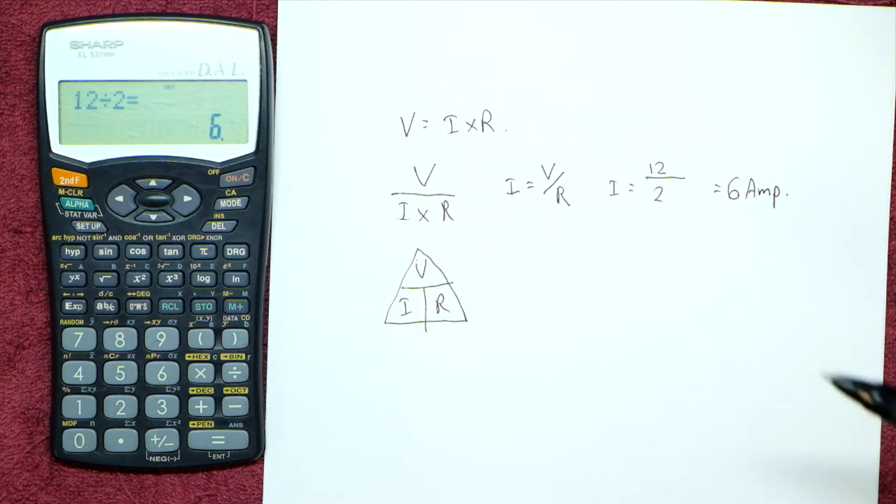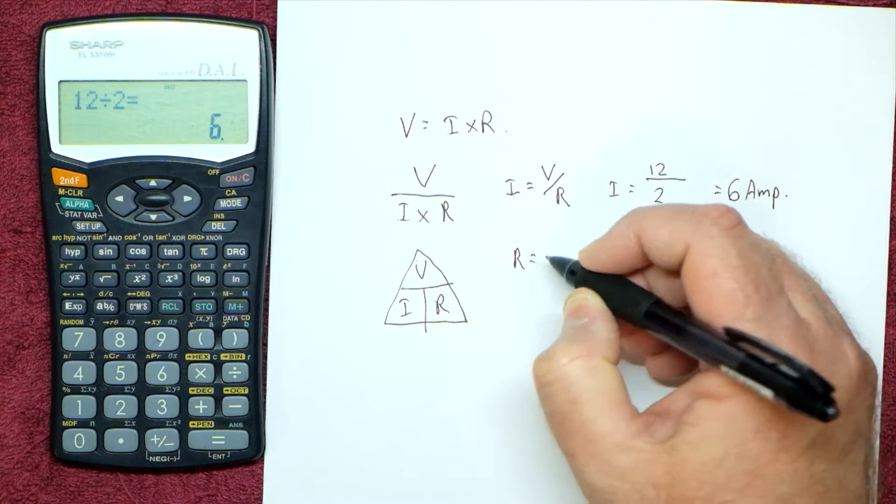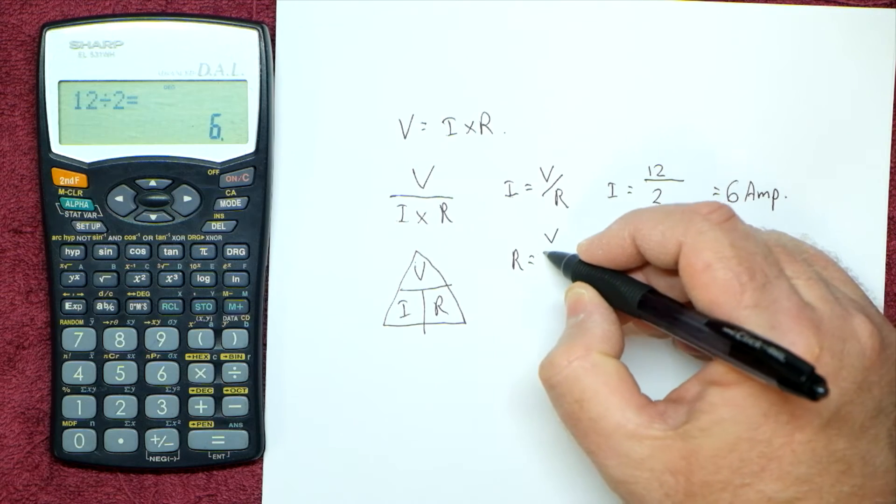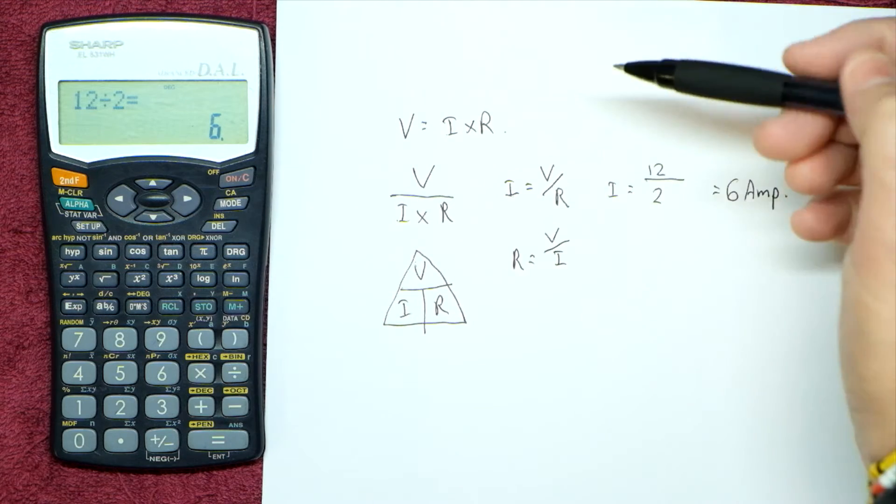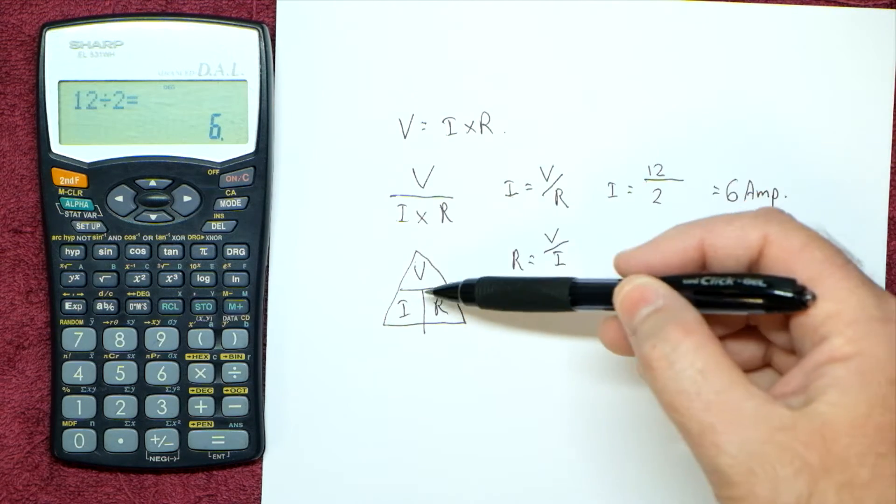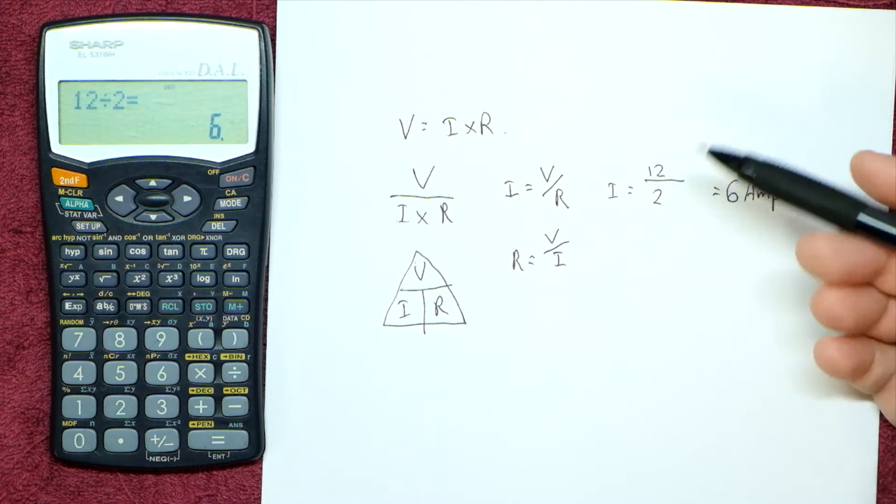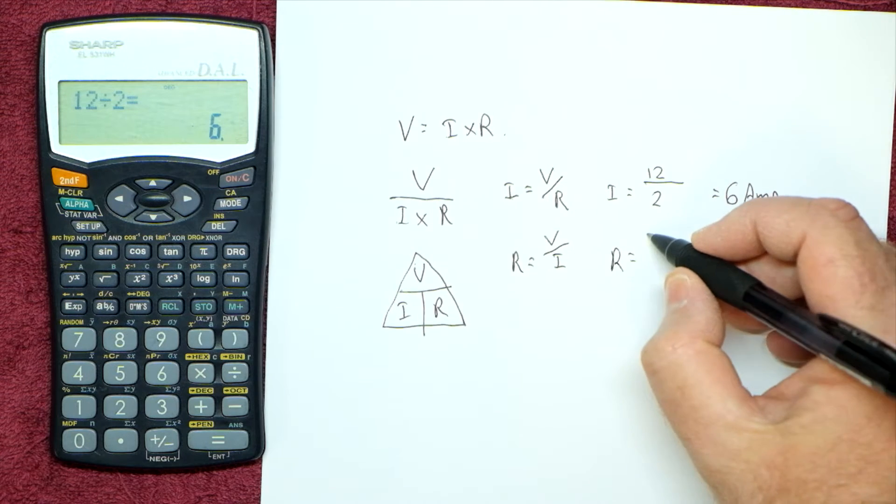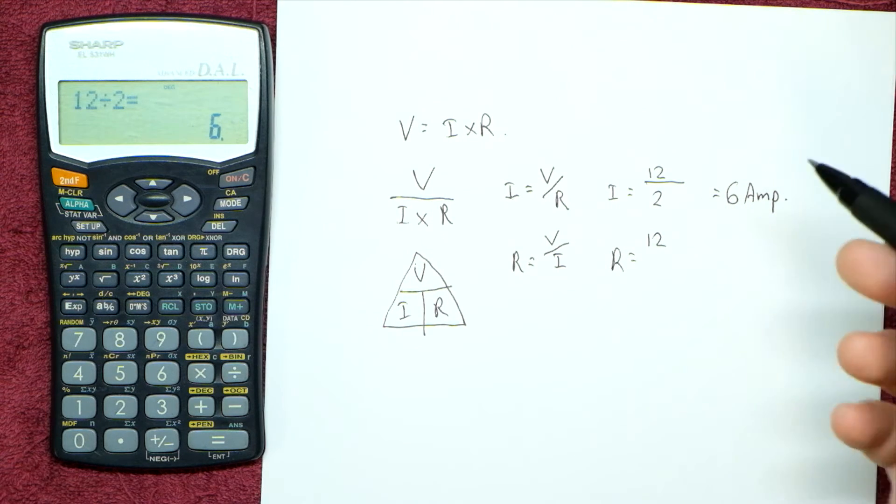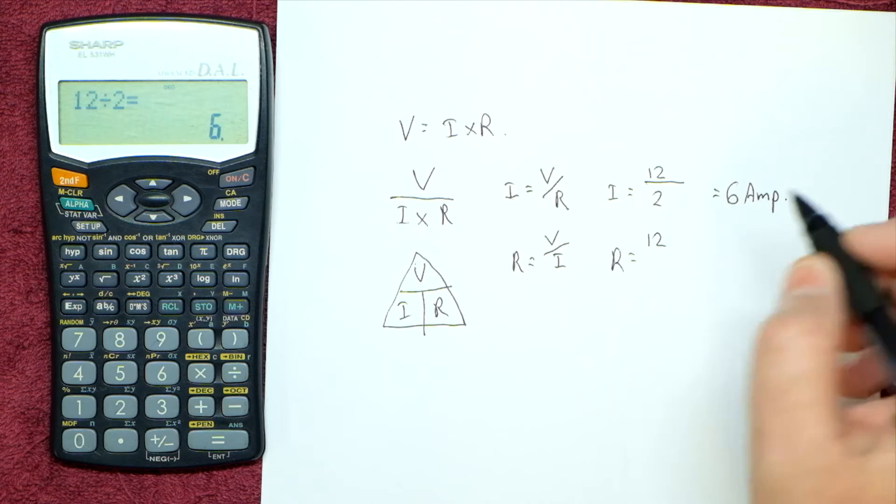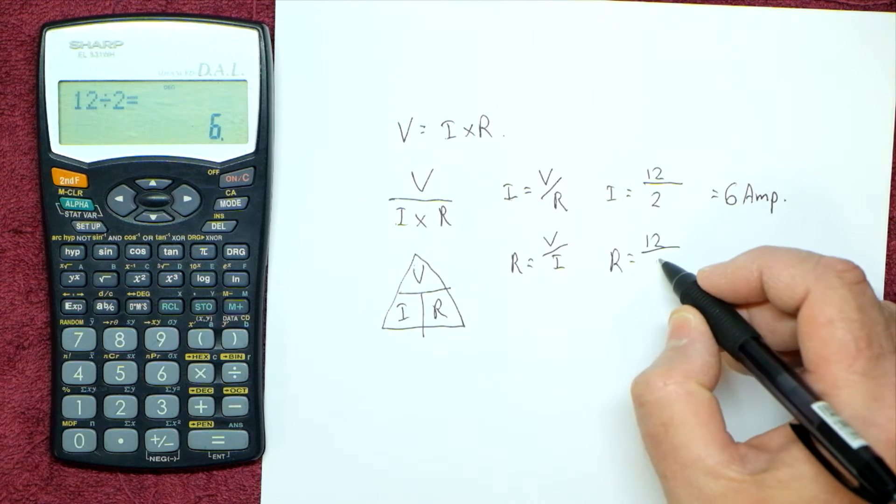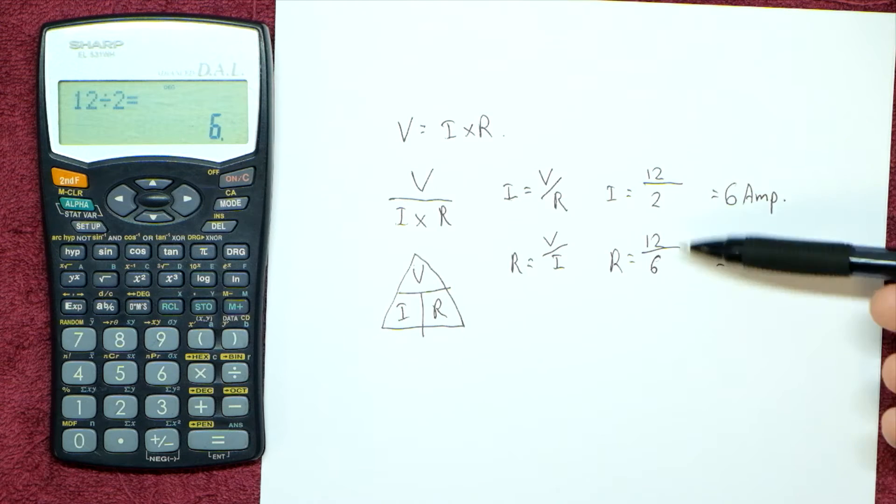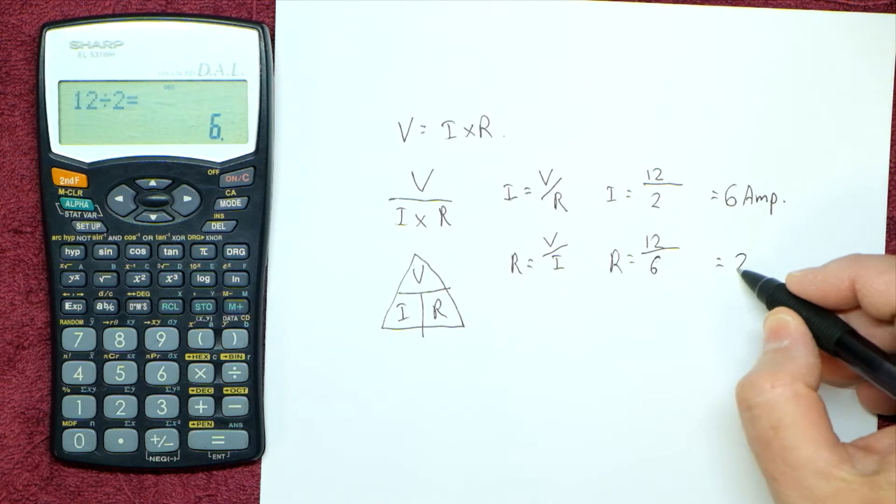So that's basically what the current flow through that circuit will be. Now if we want to know what the resistance of a circuit is and we happen to know what the voltage is, R is V over I. So we don't know what the resistance is, but we know the voltage is 12 volts. We know by measuring that it's pulling 6 amps from the power supply, divided by 6. So 12 divided by 6 is 2 ohms.